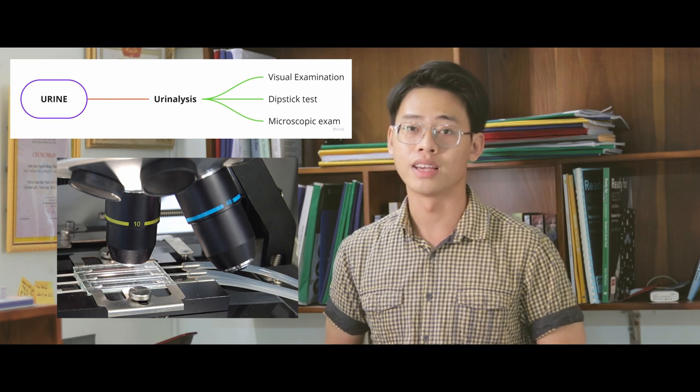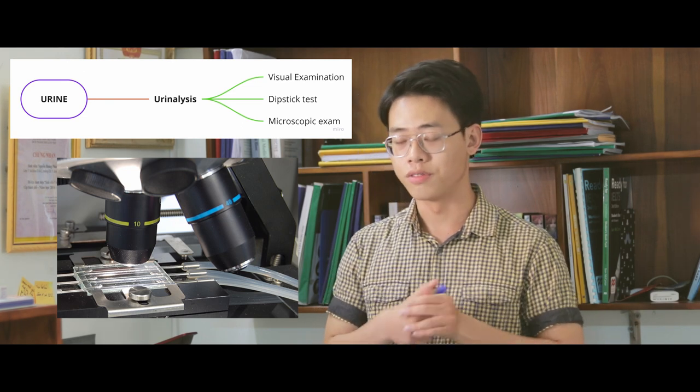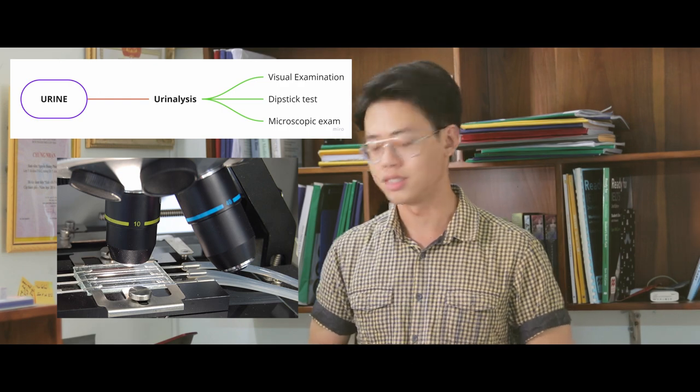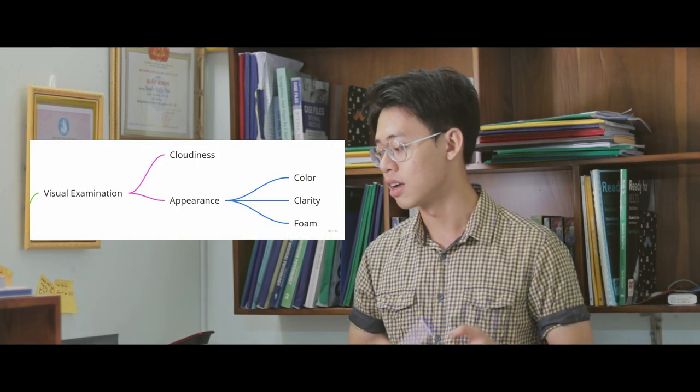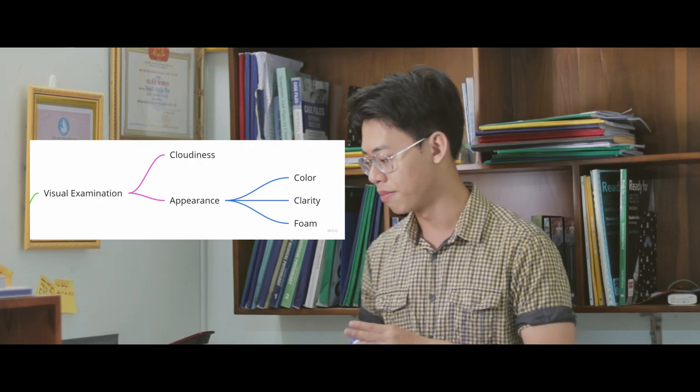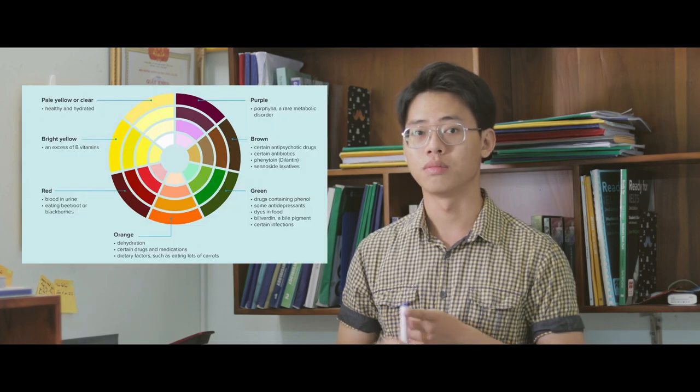The last test is the microscopic exam, where the urine sediment sample is investigated under a microscope to look for any abnormal components. The first test of a complete urinalysis is the visual exam. In the visual exam you use observation to see if there are any abnormalities in your urine sample. There are three features to look at: color, clarity, and foam.